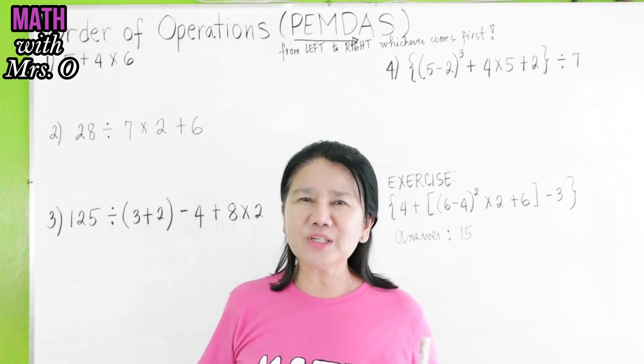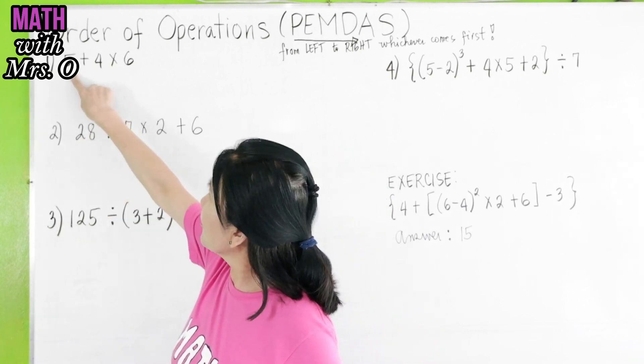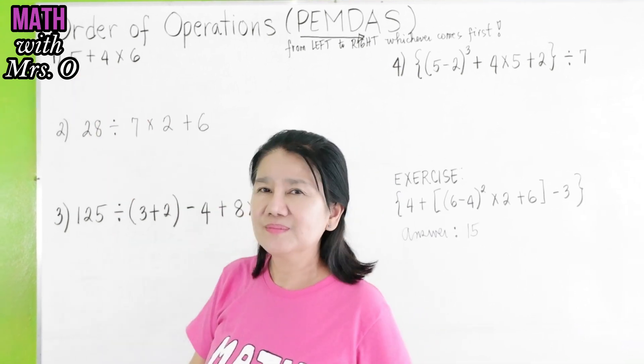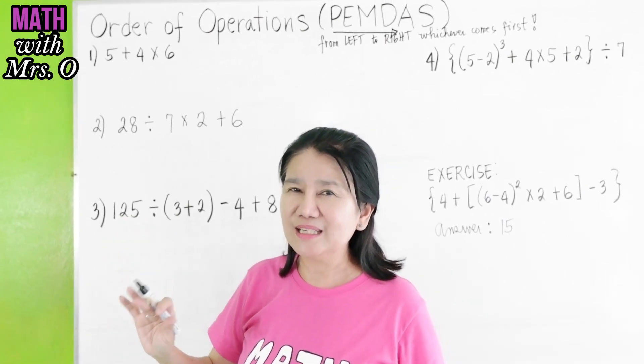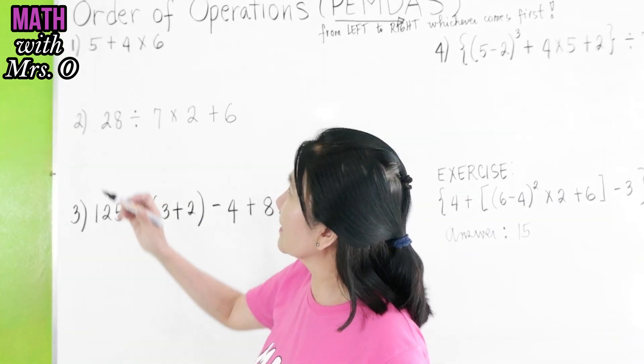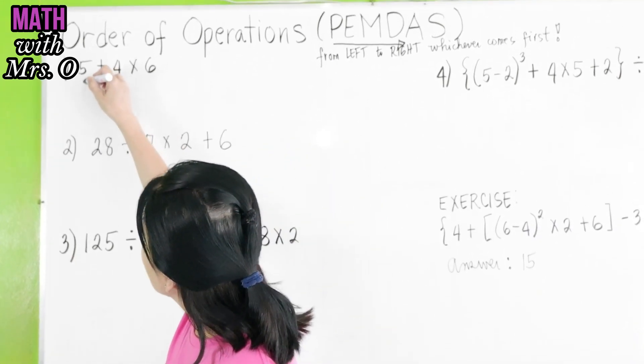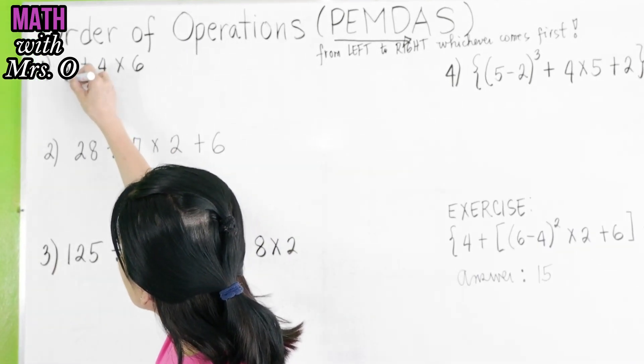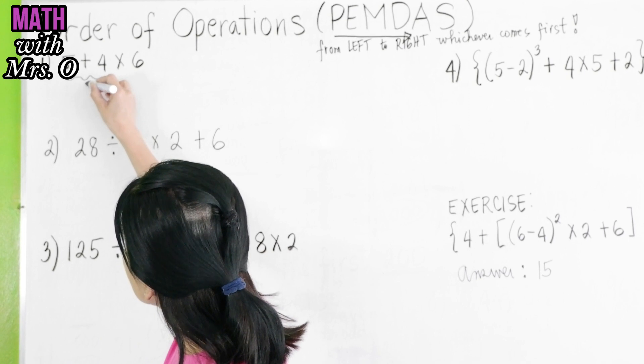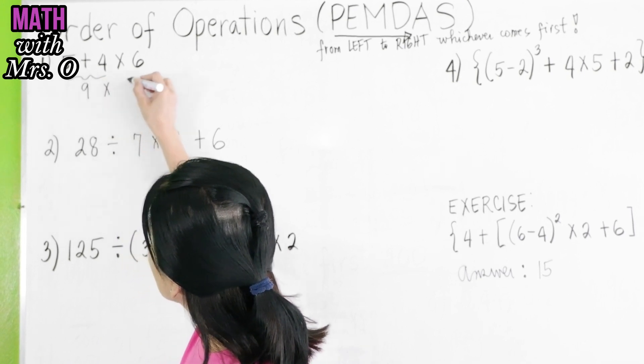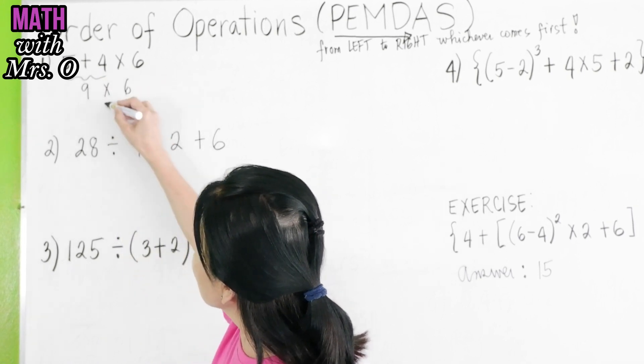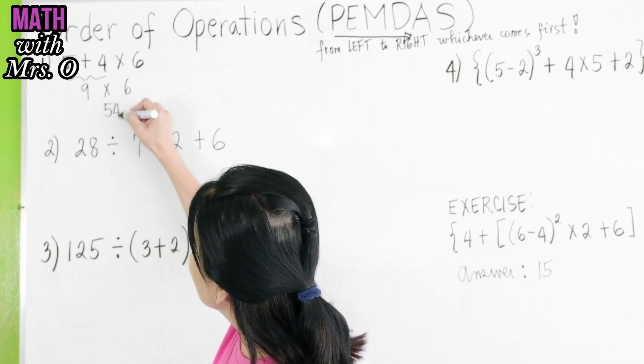Let's have a very simple example number one: 5 + 4 × 6. We can solve it in two ways. Let me see which one is correct. So, if we add this first, we get nine, and then we'll multiply it by six. Nine times six gives us 54.